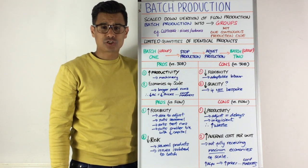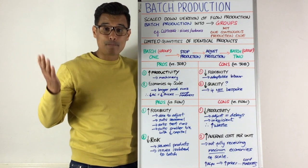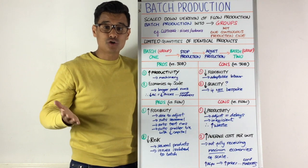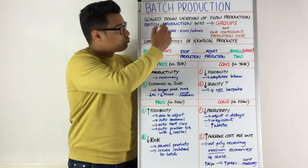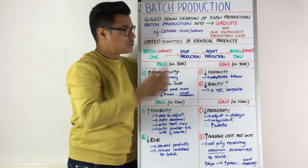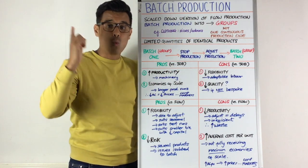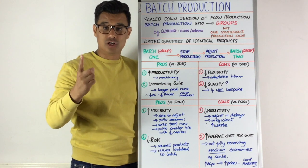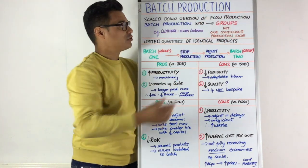Let's have a session on batch production. Batch production is basically a scaled-down version of flow production, and it's when you group production into groups, as opposed to one continuous production line, which is basically what flow production is.